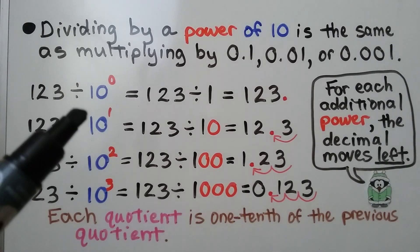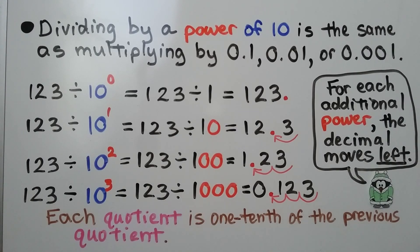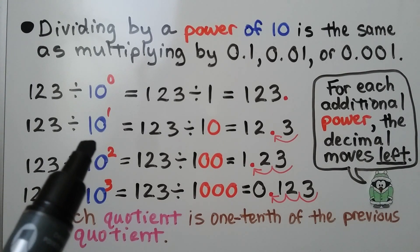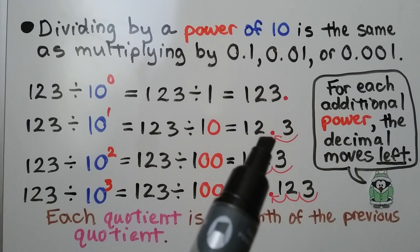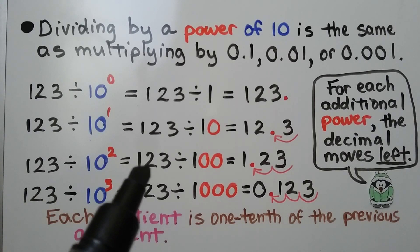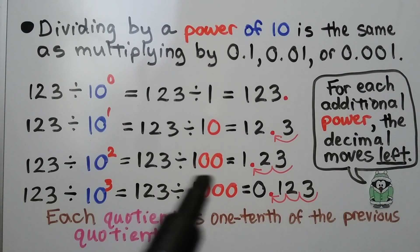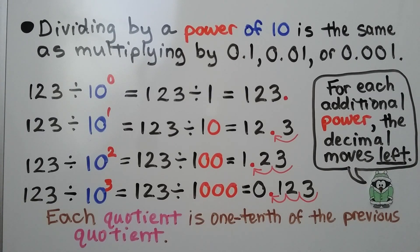We have 123 divided by 10 to the zero power — that means 123 divided by one, so it keeps its identity; it's 123. When we have 123 divided by 10 to the first power, that means 123 divided by 10, and our decimal point is going to move one hop to the left. 123 divided by 10 to the second power equals 123 divided by 100, which is 1 and 23 hundredths. The decimal point moves two hops to the left. Each quotient is one-tenth of the previous quotient.